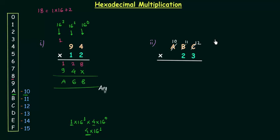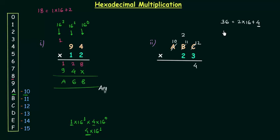3 multiplied by 12 is 36. 36 is not a hexadecimal number, so we have to break it: 2 multiplied by 16 plus 4. So 2 is the carry and 4 will come here. 3 multiplied by 11 is 33, and we already have 2 as carry, so 33 plus 2 is 35. I will again break it because 35 is not a hexadecimal number. The carry is 2 and 3 will come here.